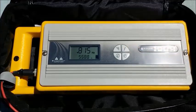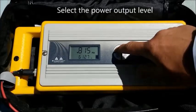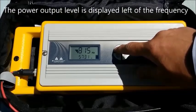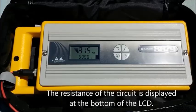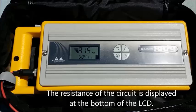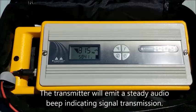Once the desired frequency has been chosen, select the power output level. The power output level is displayed left of the frequency. The resistance of the circuit is displayed at the bottom of the LCD. The transmitter will emit a steady beep indicating signal transmission.